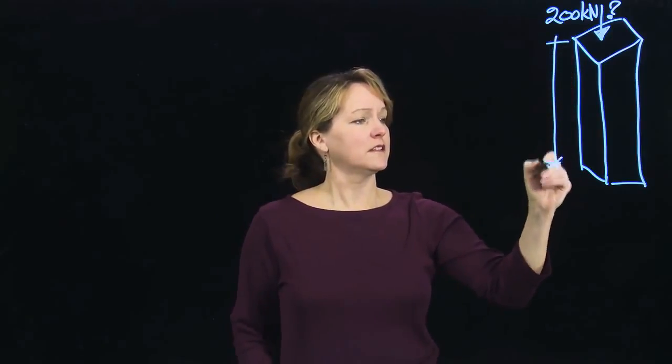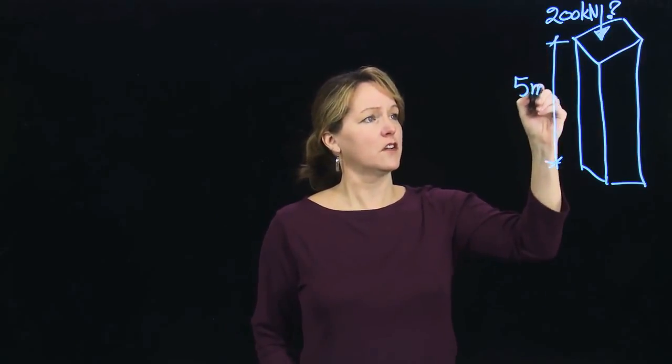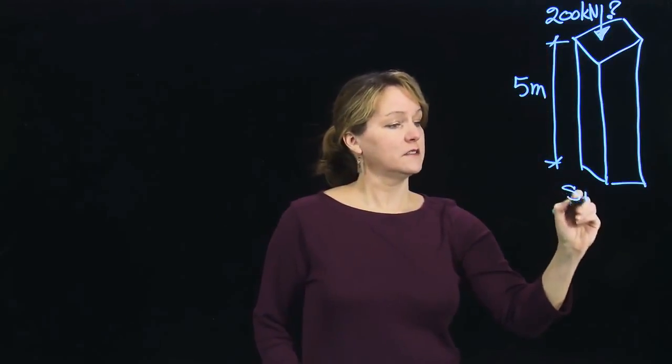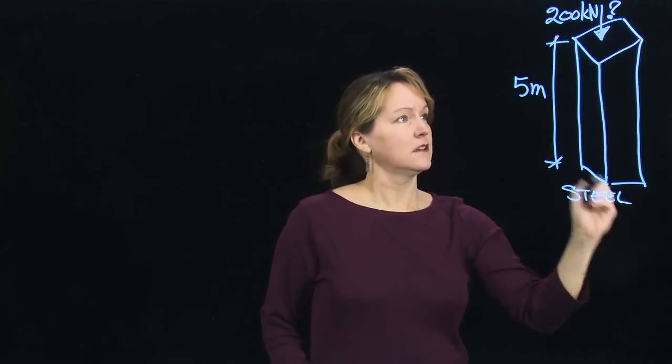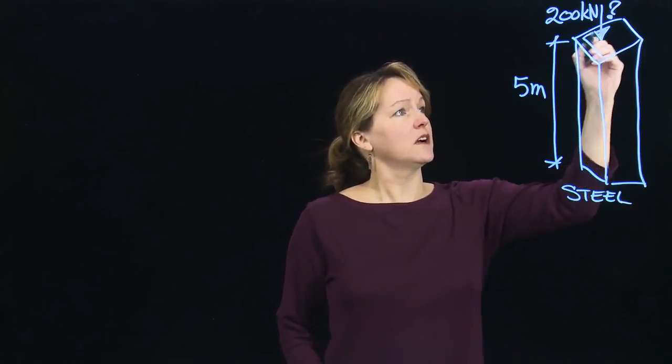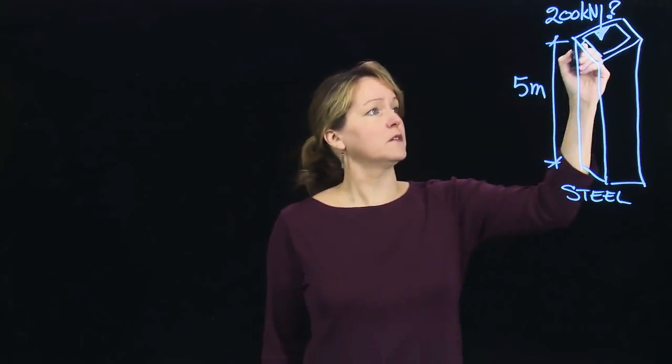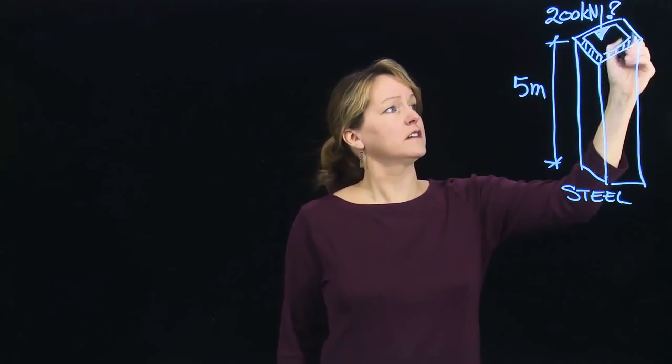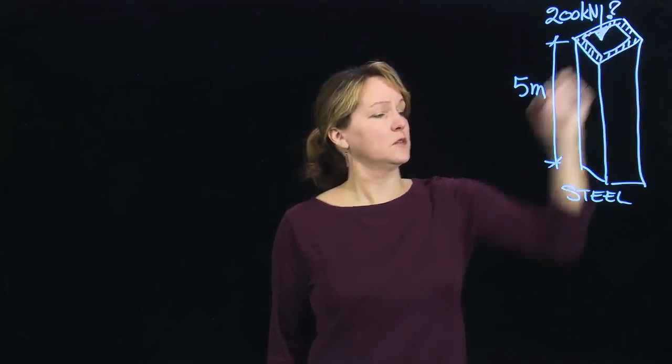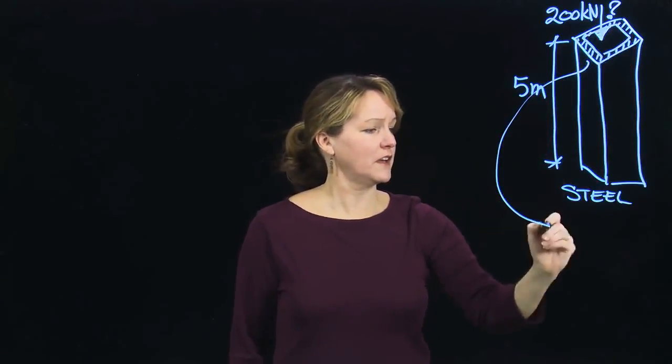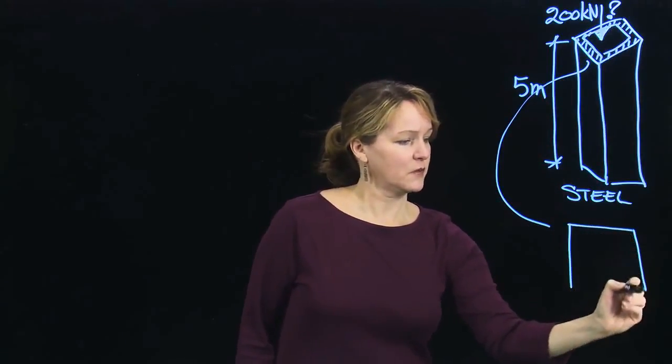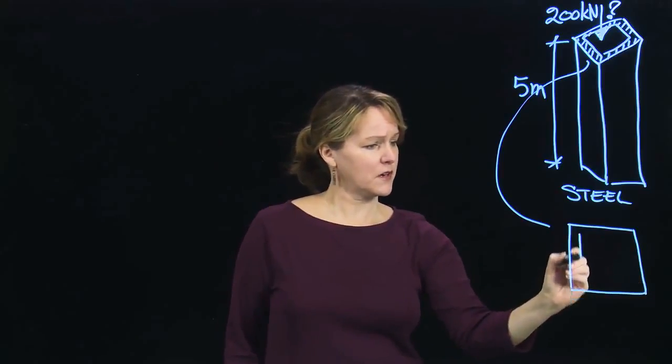This column is 5 meters tall. It's made of steel, and I'm going to make it a hollow tube instead of a solid tube, so it just has an outer little portion. Let me draw a picture of that square cross section. It's a square cross section.